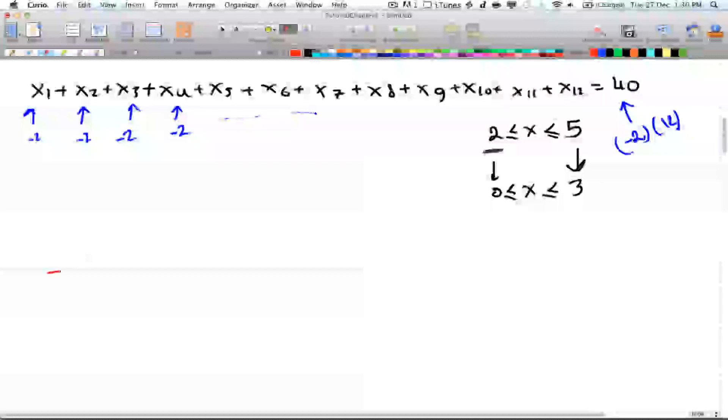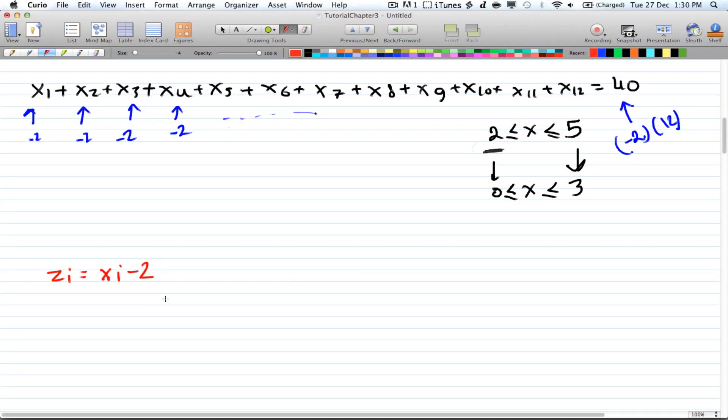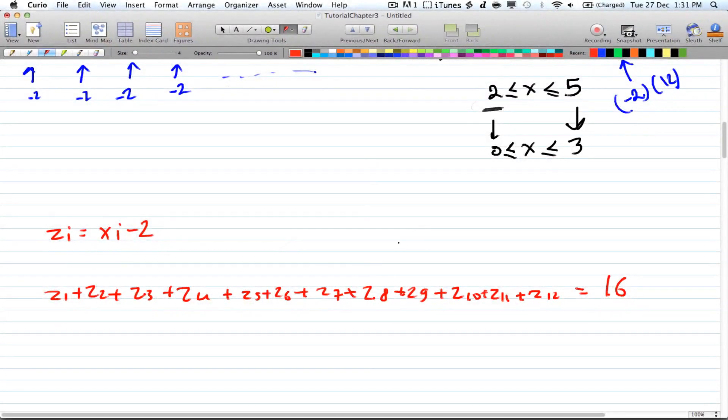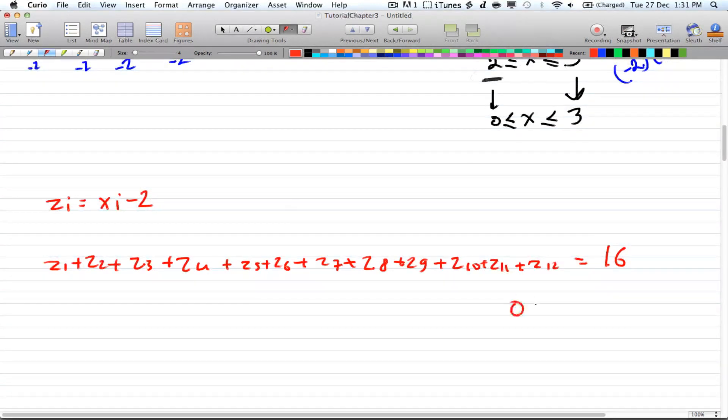So I'll call it this time z. Let's have zi is equal to xi minus 2. And you'll have z1 plus z2 plus z3 plus z4 plus z5 plus z6, z8 plus z9 plus z10 plus z11 and finally z12. And that will be equal to 16, and 16 is just 40 minus 24. So this is smaller than or equal to 3.